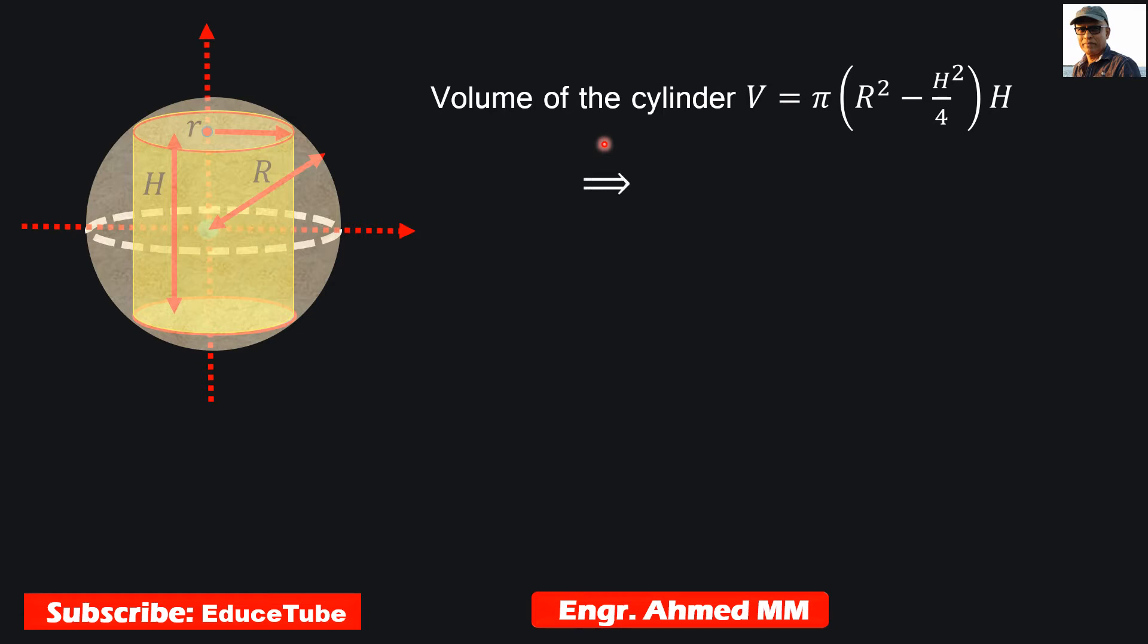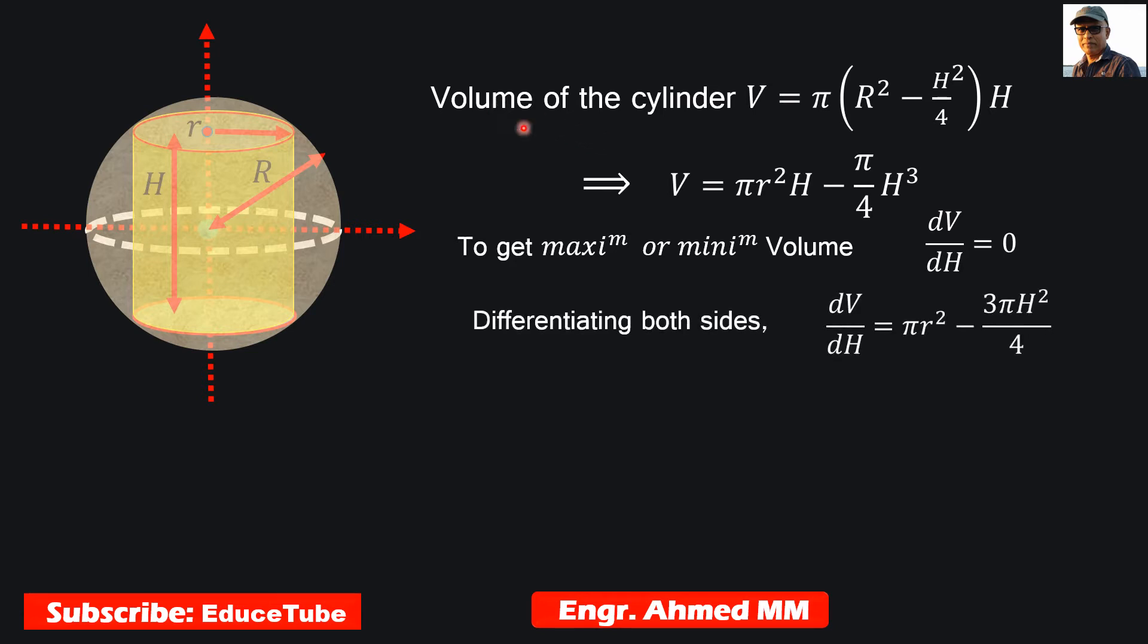We have to do differentiation. To get maximum or minimum volume, the condition is first derivative equal to zero. So differentiating both sides of this equation, dV/dH equals this result. For maximum volume, this right-hand side we are writing equal to zero.